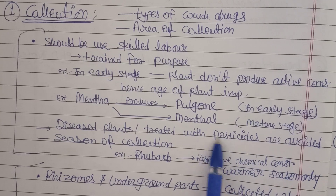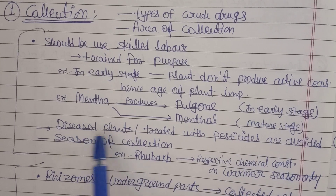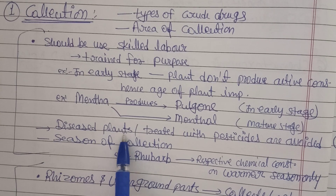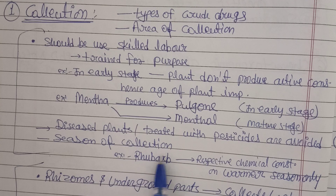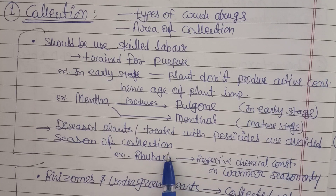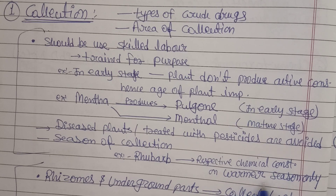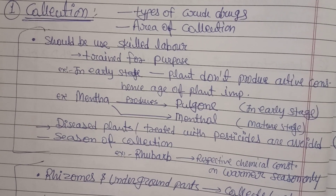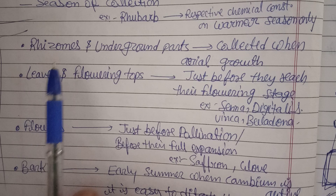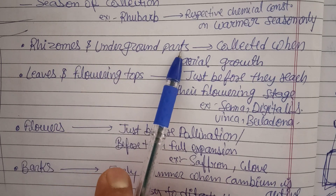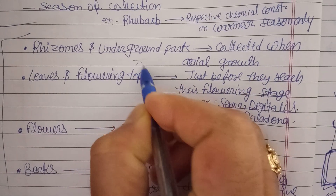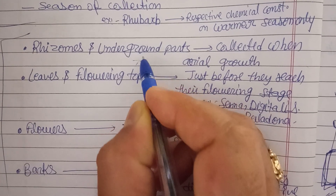Diseased plants show abnormal color changes and spots. Season of collection is also very important — for example, rhubarb produces its chemical constituents responsible for therapeutic activity only in the warmer season. So rhubarb is collected only in the warmer season. Rhizomes and underground plants like ginger and rauwolfia root are collected when the aerial growth is well established, as this indicates the underground parts are ready to harvest.